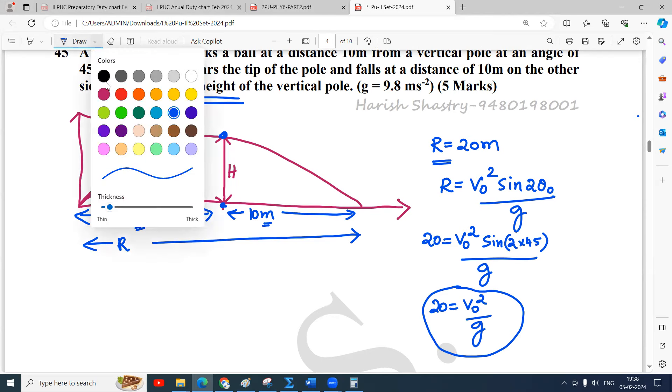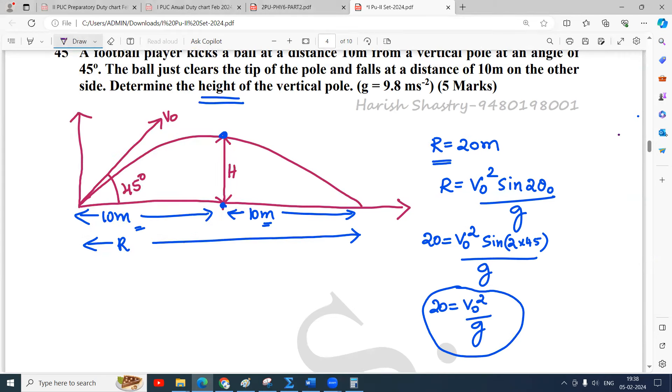Maximum height H equals V₀² sin²(θ₀) divided by 2g. This implies H equals V₀²/g times sin²(θ₀)/2. We know V₀²/g equals 20, so H equals 20 times sin²(45°) divided by 2.